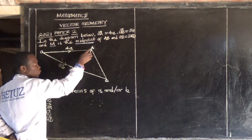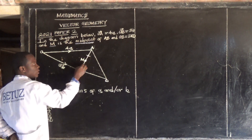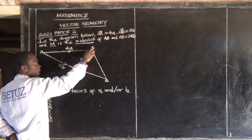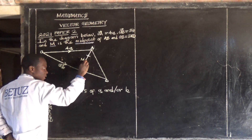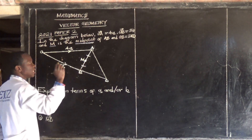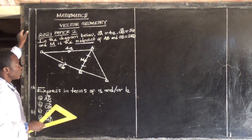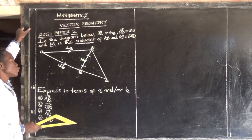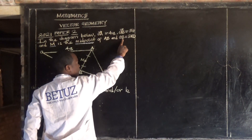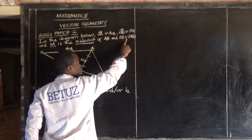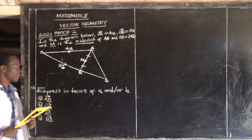M is the midpoint of AB, meaning M cuts AB into two equal parts. So AM is equal to MB — these two are equal because M is the midpoint of AB. Take note, very, very important point.